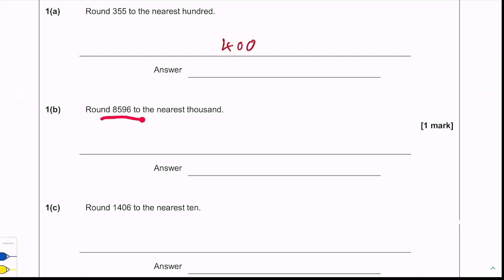Part b: round 8,596 to the nearest thousand. We're going to look at the hundreds column, and because it's a five or above we need to round up, so this rounds to 9,000.